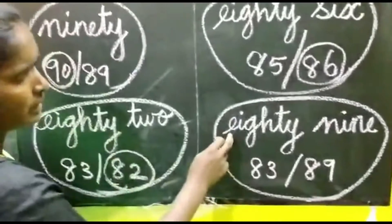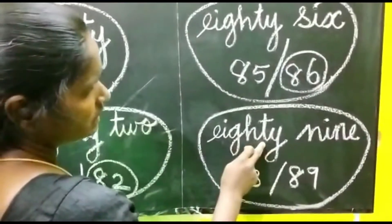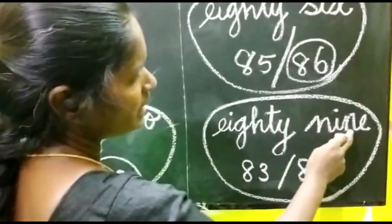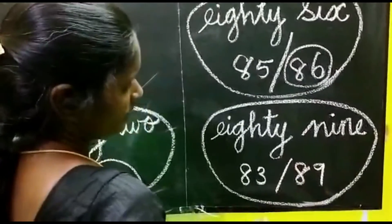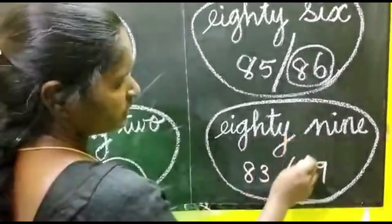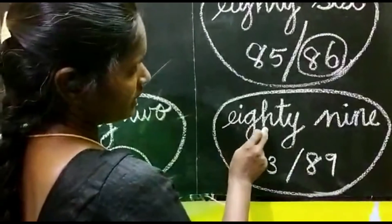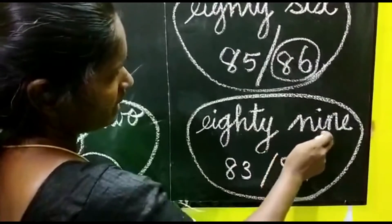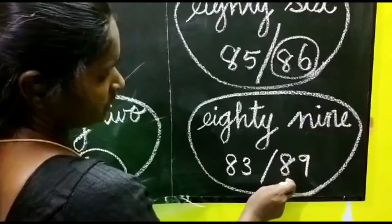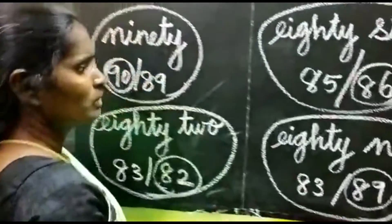The next one. E-I-G-H-T-Y. 89. N-I-N-E. 89. Okay. Here, 83 and 89 are given. Which one is the correct spelling for these two numbers? 89. EIGHTY NINE. So, circle 89.